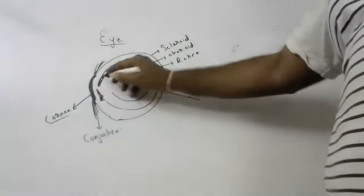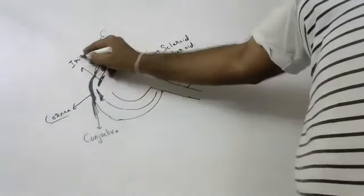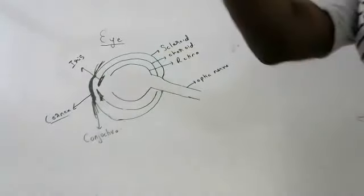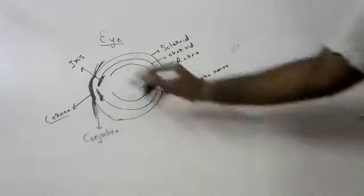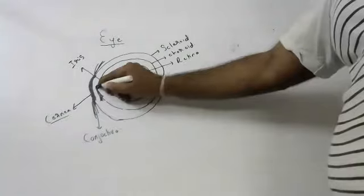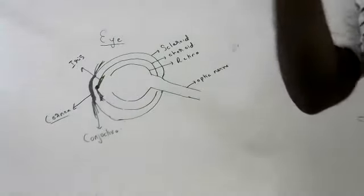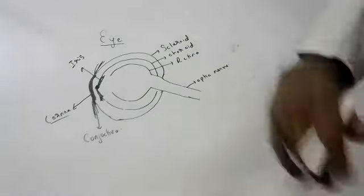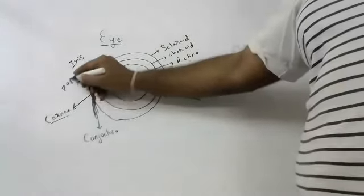This is called iris. Iris is the black type of thing which you can see in your eye. In the iris, in the middle, you have an aperture. There is an aperture in the middle of the iris - you can see the black one, small tiny one - that is called pupil.